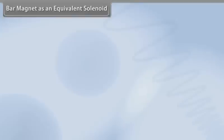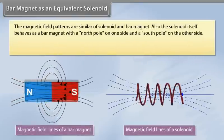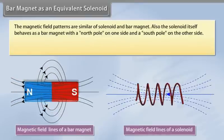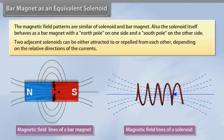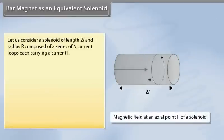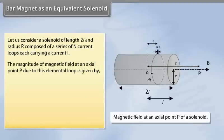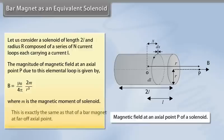Bar Magnet as an Equivalent Solenoid: The magnetic field patterns of a solenoid and a bar magnet are similar. The solenoid itself behaves as a bar magnet with a north pole on one side and a south pole on the other. Two adjacent solenoids can either attract or repel each other depending on the relative directions of the currents. For a solenoid of length 2L and radius R composed of N current loops each carrying current I, the magnitude of the magnetic field at an axial point P due to the elemental loop is given by μ₀/4π × 2m/R³, where m is the magnetic moment of the solenoid. This is exactly the same as that of a bar magnet at a far off axial point.